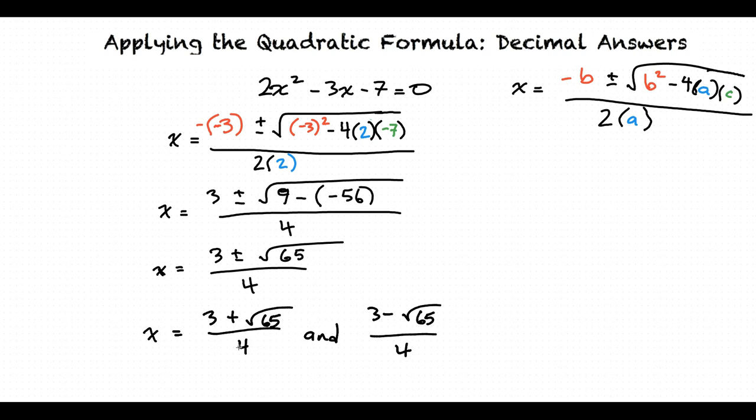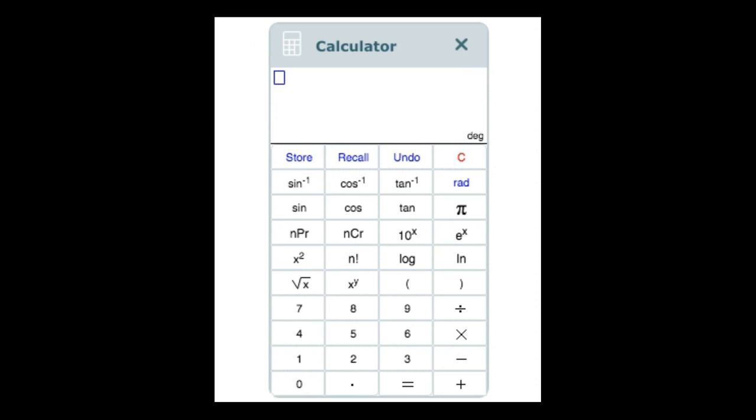We need to convert these answers into decimal answers, so we will use the graphing calculator to convert these into decimals. Our first answer is (3 + √65) / 4, so we will type that in the calculator.